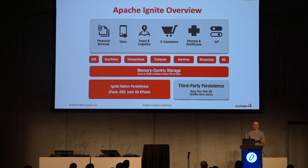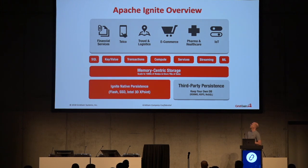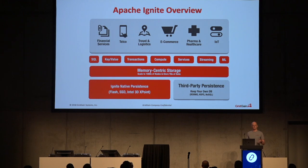We have transactions. Compute is an important feature — rather than most databases where you take the data, bring it to the client, do the processing, and send the results back, in Ignite you tend to send the compute to the data rather than the other way around, so it works much more quickly because the data's already there. We also have services — you can define your own APIs, like microservices within the grid — and streaming data for real-time or near real-time workloads.